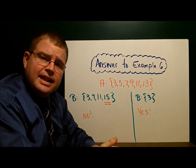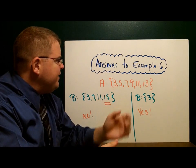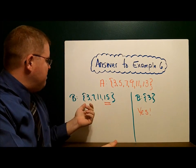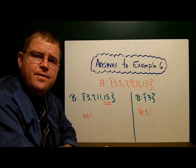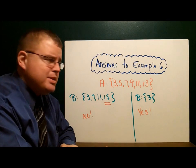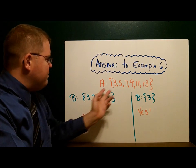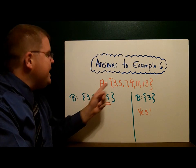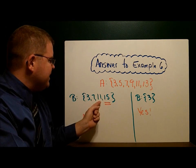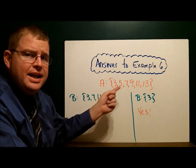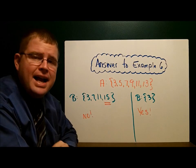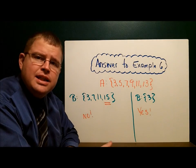Example number six. They give you set A: {3, 5, 7, 9, 11, 13}. And they said B is {3, 7, 11, 15}. Is B a subset of A? Is everything in B contained in A? No it's not. Three, yes. Seven, yes. Eleven, yes. But 15 is not in set A. Because 15 is not in set A, B is not a subset of A.